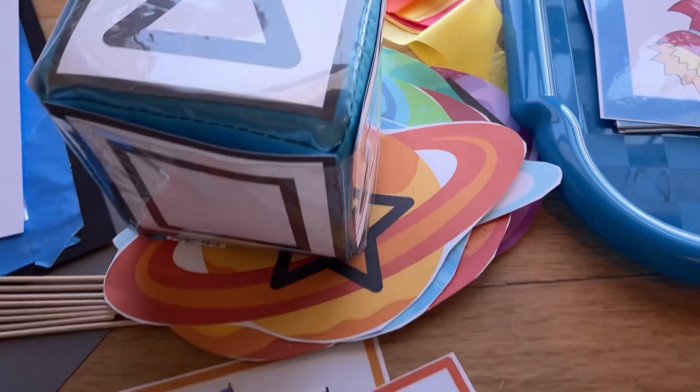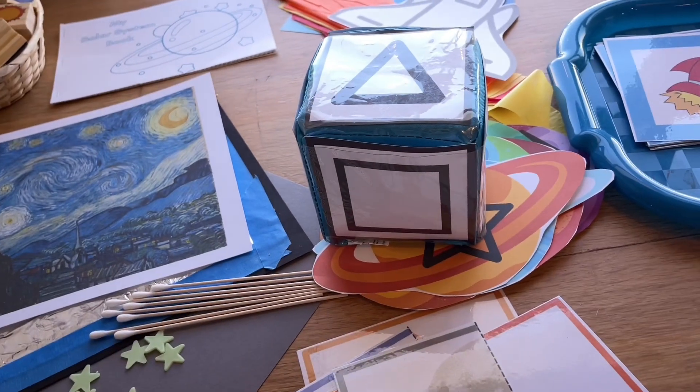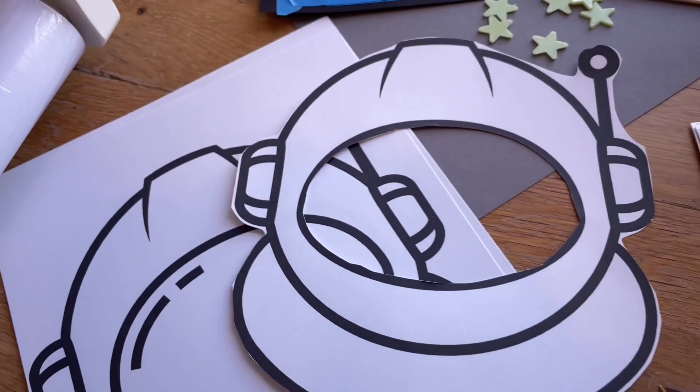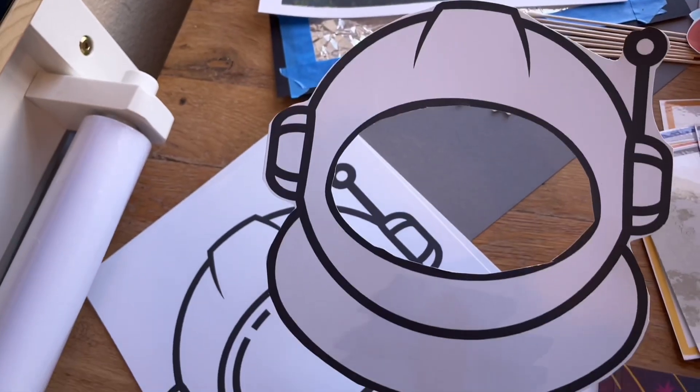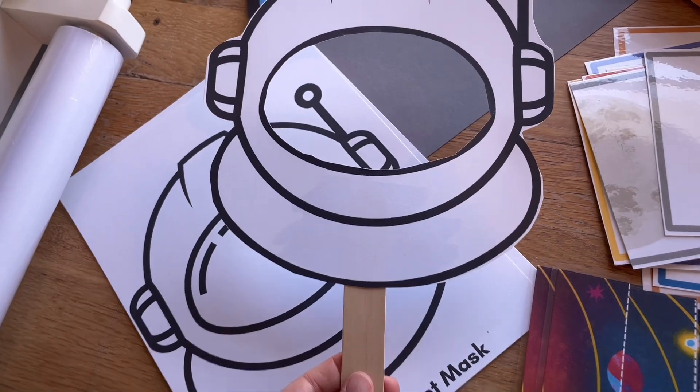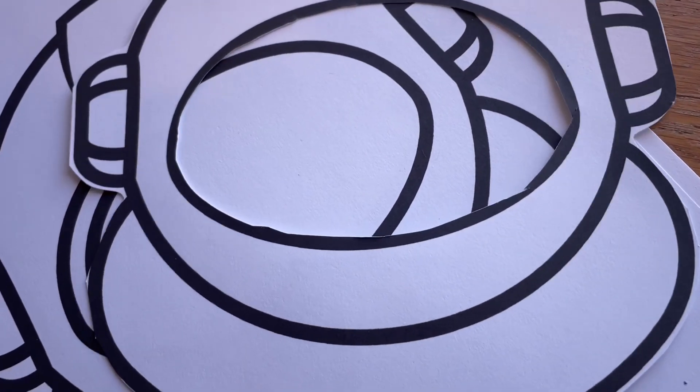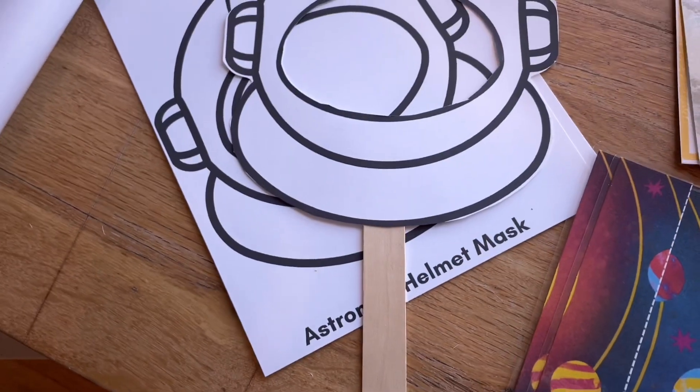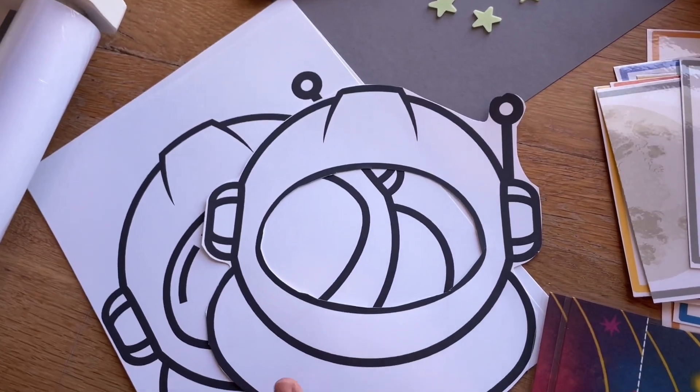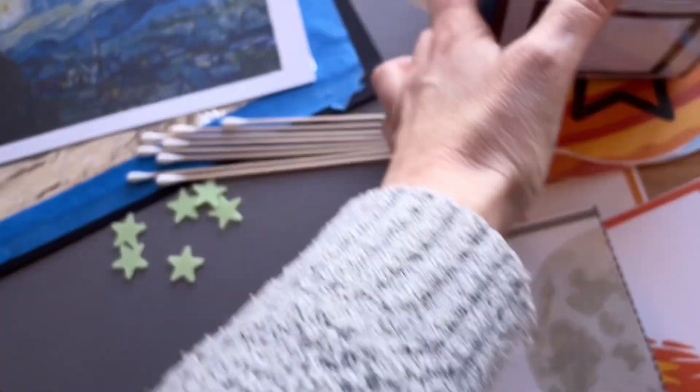For group art we will be doing these space helmets and I'll just cut these out and tape them to a jumbo stick. This will be like a mask. I'll let them color that with some markers they like. And if you wanted to make this really durable you could run that through the laminator before you put it on the stick.